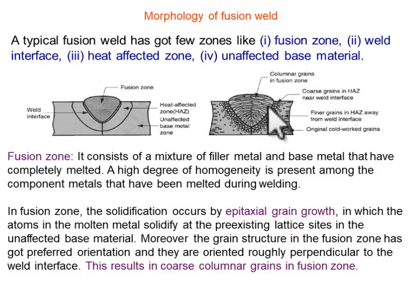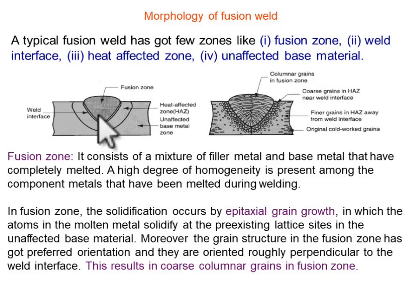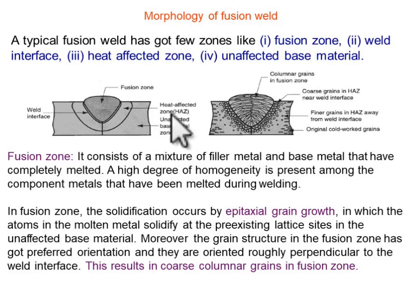When we perform welding operations, the temperature increases at the junction of two materials and different zones form between them. We need to know what those zones are, what their properties are, and how the properties of the material change after welding. In the schematic diagram, the first central zone is known as the fusion zone, where pure melting occurs. The weld interface differentiates the fusion zone from the heat affected zone, and beyond that is the unaffected base metal zone.